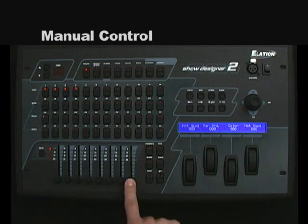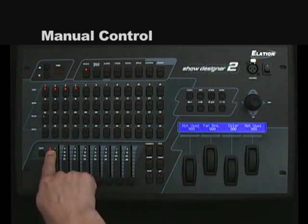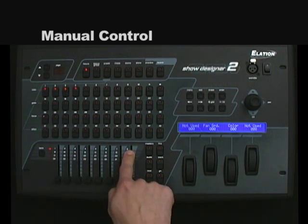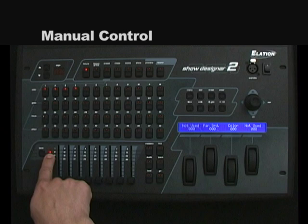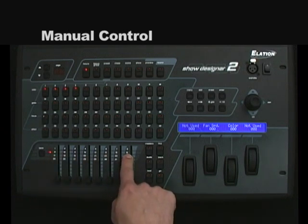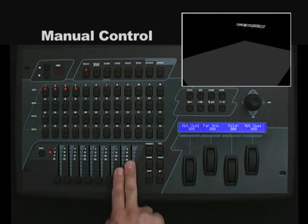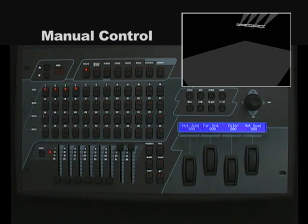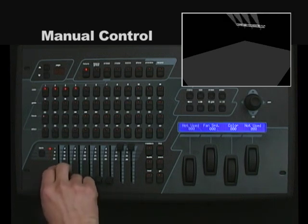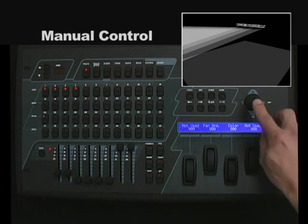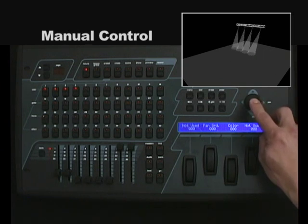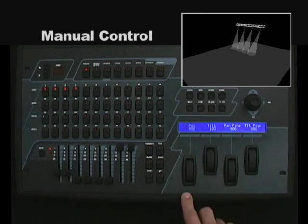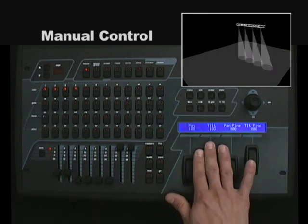If you're going to be using the faders to control your lights, while the LED for bank one is lit up, you have control of channels 1 through 8. Pressing the bank button will illuminate the second bank, giving you control of channels 9 through 16. I'll open up the shutter and dimmer with channels 15 and 16 by raising the two faders up, then bank up to use faders 1 and 2 to control the pan and tilt. You can also use the joystick or the wheels to control the beam position.